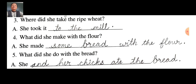Once again, let me repeat. Third question: Where did she take the ripe wheat? She took it to the mill. Fourth question: What did she make with the flour? She made some bread with the flour. Fifth question: What did she do with the bread? She and her chicks ate the bread.